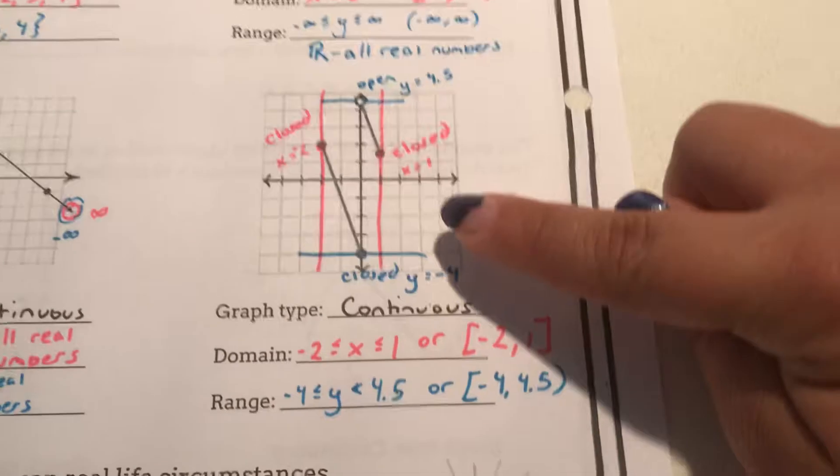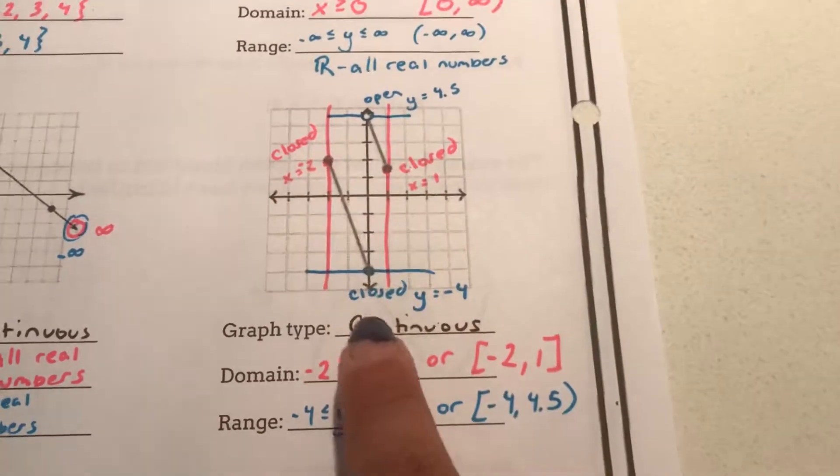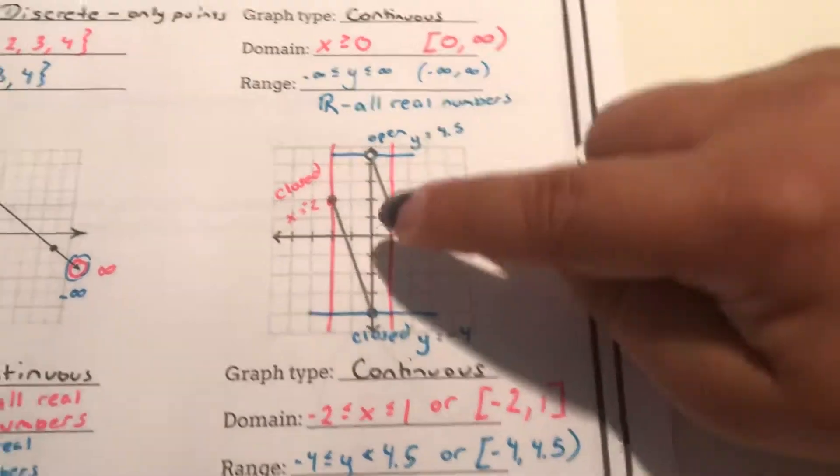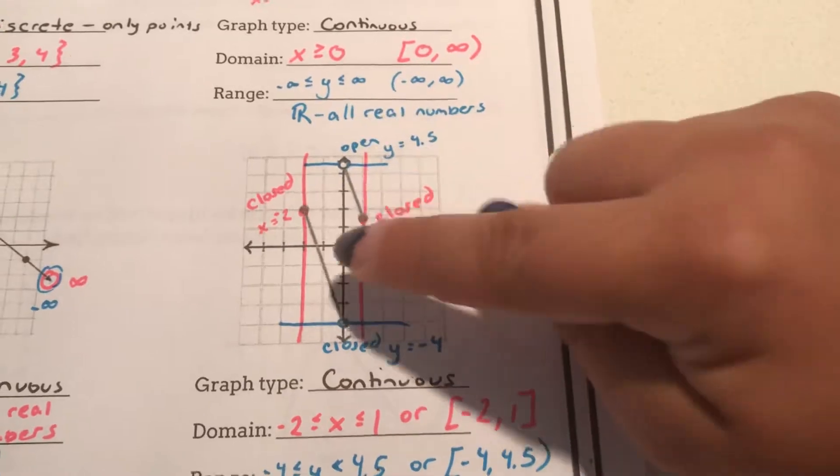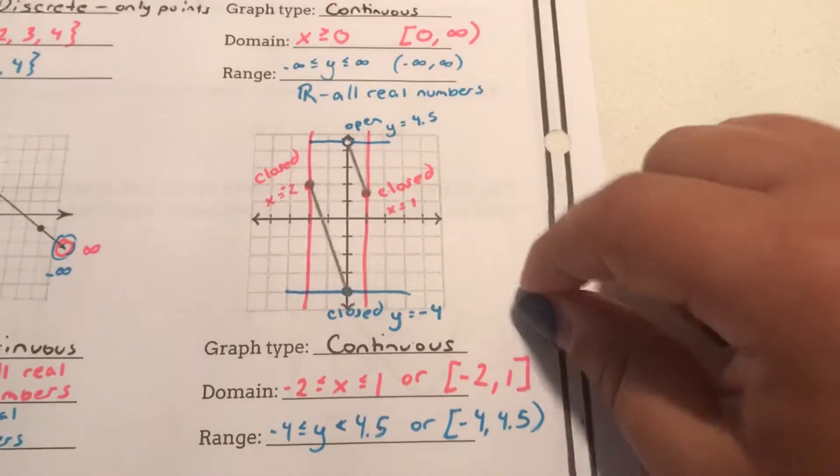And this graph is a great example for you to check out where we have closed dots and open dots. And it's important to note that this is continuous. A line is drawn. There are infinitely many points on that line. Therefore this is continuous.